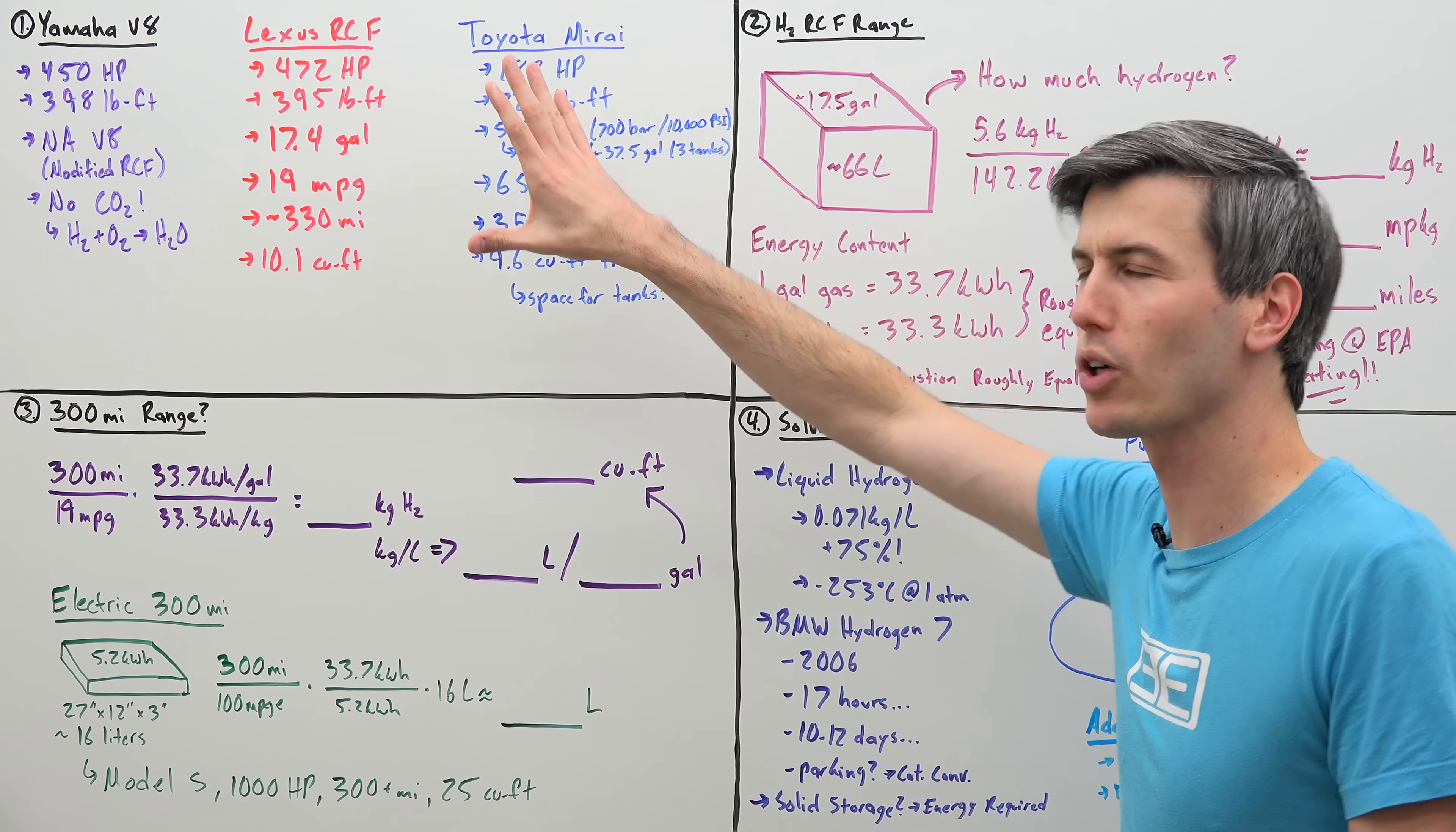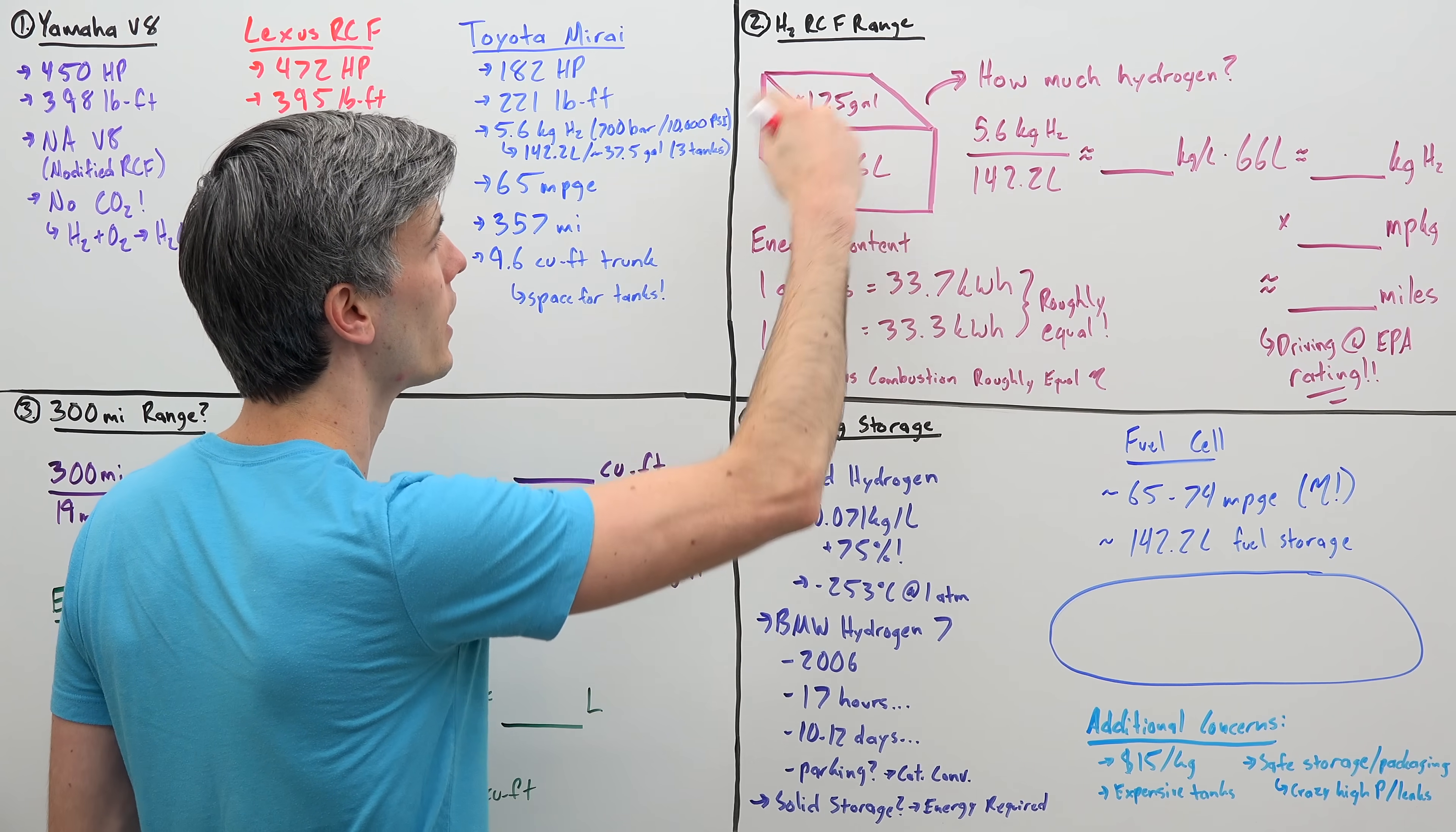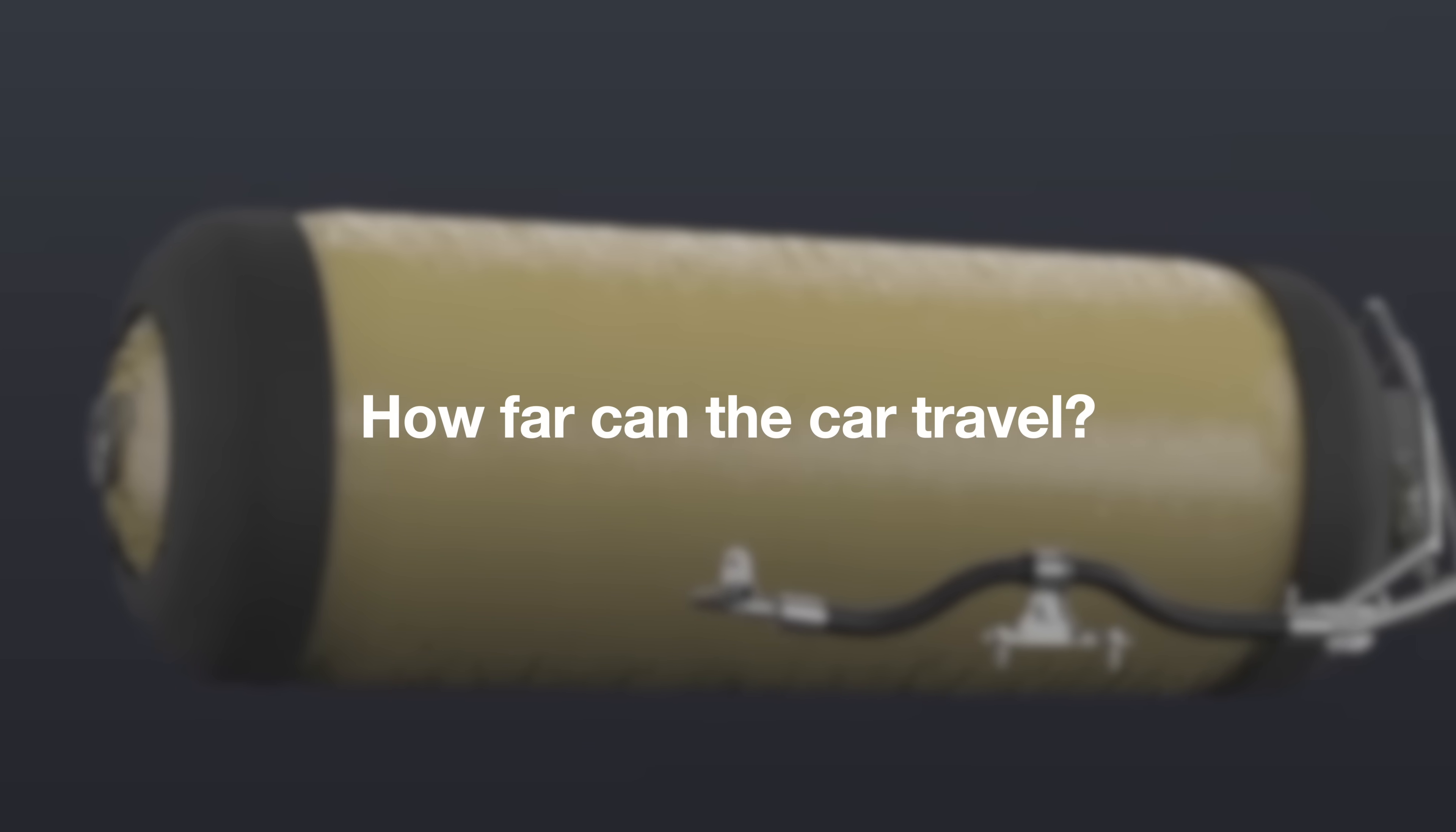All right let's dive straight into the problem. So let's assume we're going to create a Lexus RCF that instead of running on gasoline it runs on hydrogen. Now the problem here is that hydrogen is at 10,000 psi but let's just assume we can safely use this 17.4 gallon tank and fill it with this hydrogen at 10,000 psi. So we have about 66 liters and we want to figure out how much hydrogen can we store within this fuel tank. So if we look at our Toyota Mirai we know that we have 5.6 kilograms of hydrogen within 142.2 liters. So if we take that 5.6 divided by 142.2 that tells us how many kilograms of hydrogen we have per liter which is about 0.04. Now if we have 66 liters of available space to store that hydrogen, well that tells us we have 2.6 kilograms of hydrogen available to use.